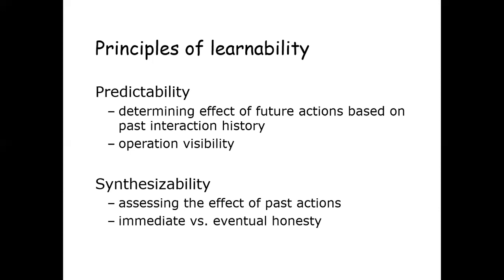Next is synthesizability. Predictability focuses on the user's ability to determine the effect of future interactions. The principle of honesty relates to the ability of the user interface to provide an observable and informative account of change. This notification can come immediately or eventually — immediately requires no further interaction initiated by the user, while eventually appears after explicit user directives to make changes observable.